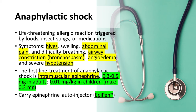Anaphylactic shock is a life-threatening systemic allergic reaction triggered by substances like foods, insect stings, or medications. For instance, a peanut-allergic individual consuming even trace amounts of peanuts can experience anaphylactic shock. Symptoms include hives, swelling, abdominal pain, difficulty breathing, airway constriction, bronchospasm, angioedema, and severe hypotension.